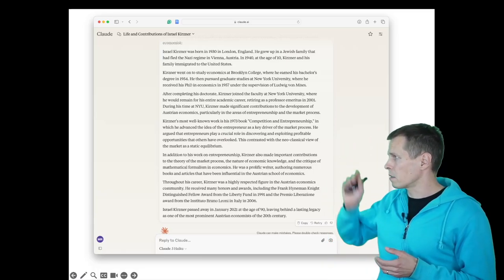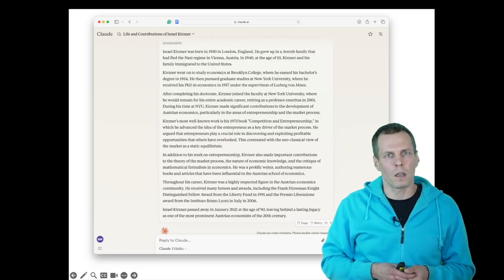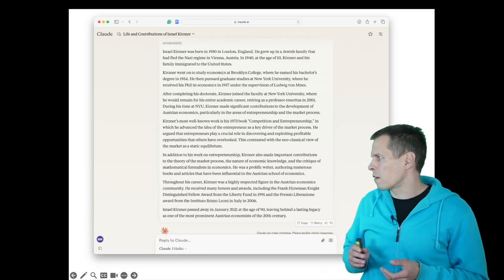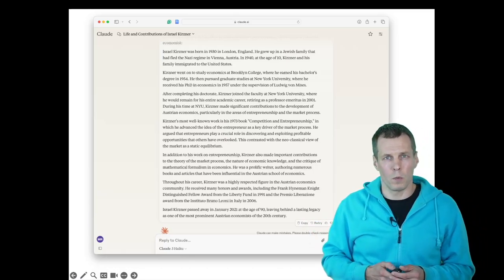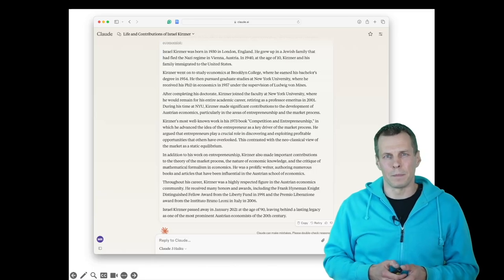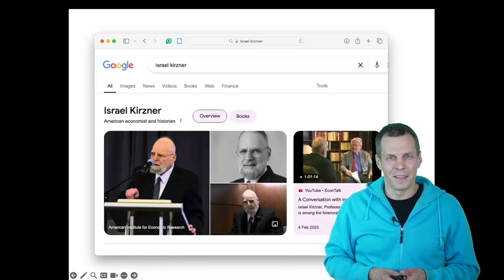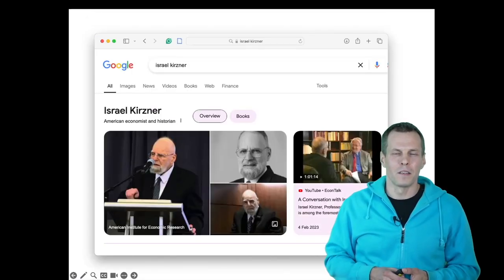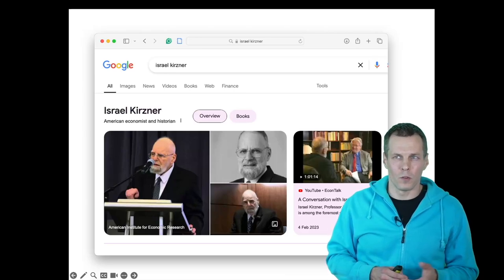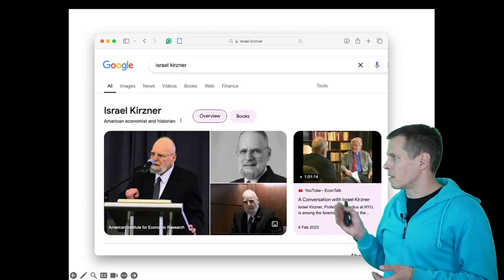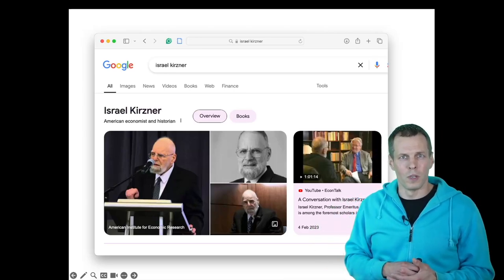It starts well. Most of this is correct. So Israel Kirzner was born in the 1930s. And then the biography ends that he passed away in 2021 at the age of 90. Well, he is very much alive still. If you Google his name you can view that the dead guy is giving a talk on YouTube in 2023.